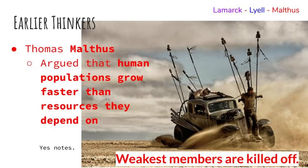Thomas Malthus argued that human populations are growing faster than the resources they depend on — he was the first dystopian thinker. His writing was dystopian: nothing is ever going to get better. He believed that famine and disease break out when populations become too large, and it keeps populations in check by killing off the weakest members.